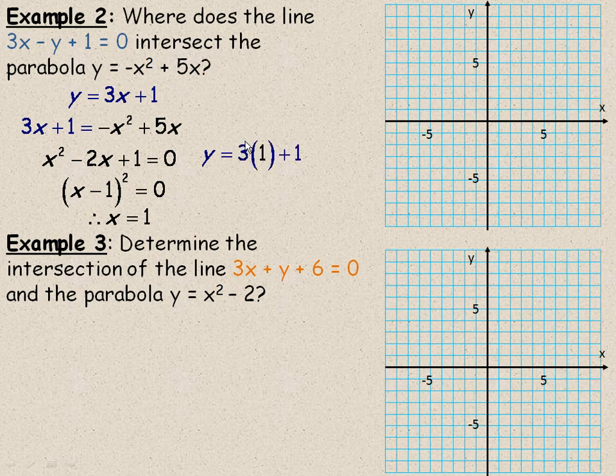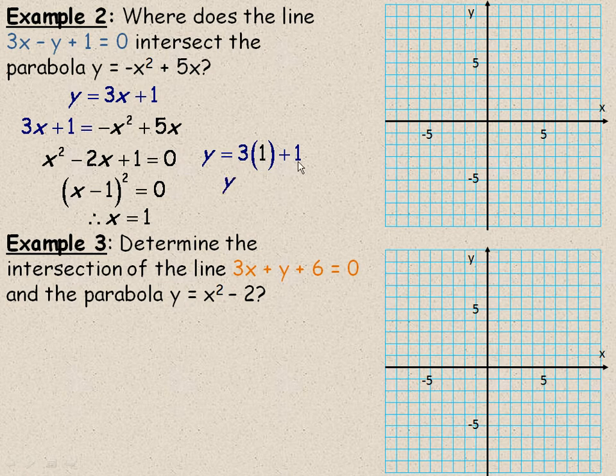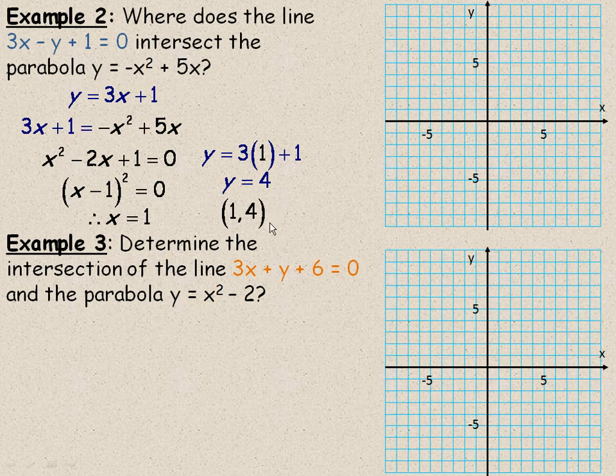So I'll go back to my line again and substitute 1 in place of x. So 3 times 1 is 3, plus 1 gives us a y value of 4. So that means that the intersection point should be (1, 4).